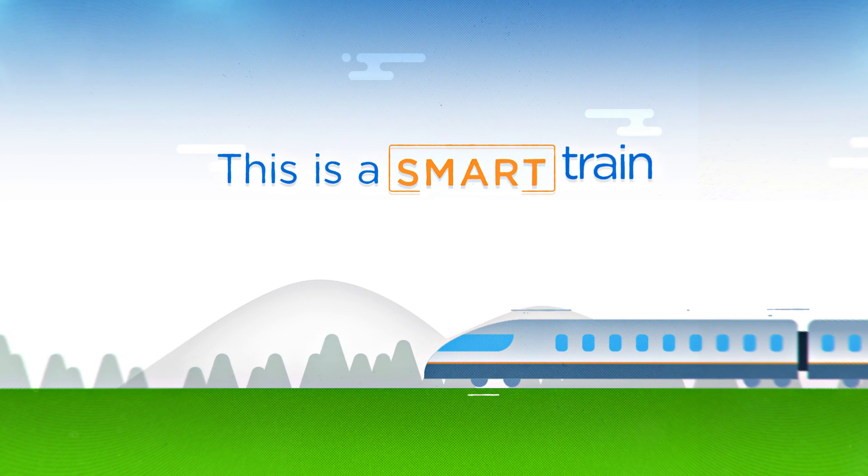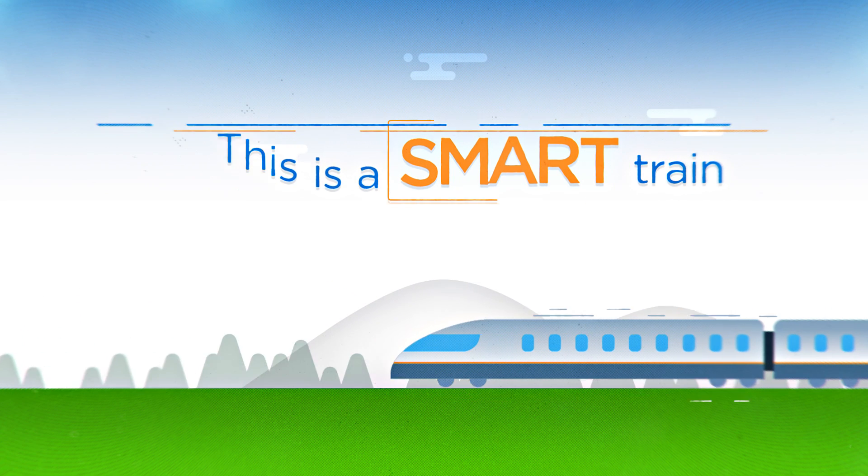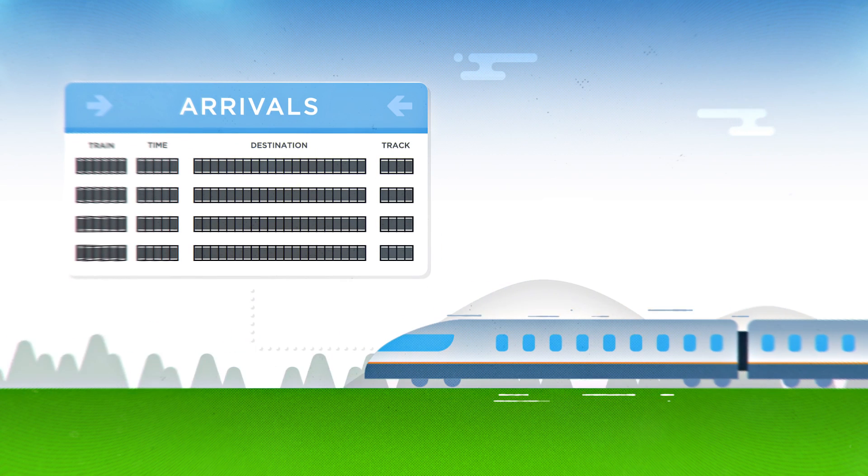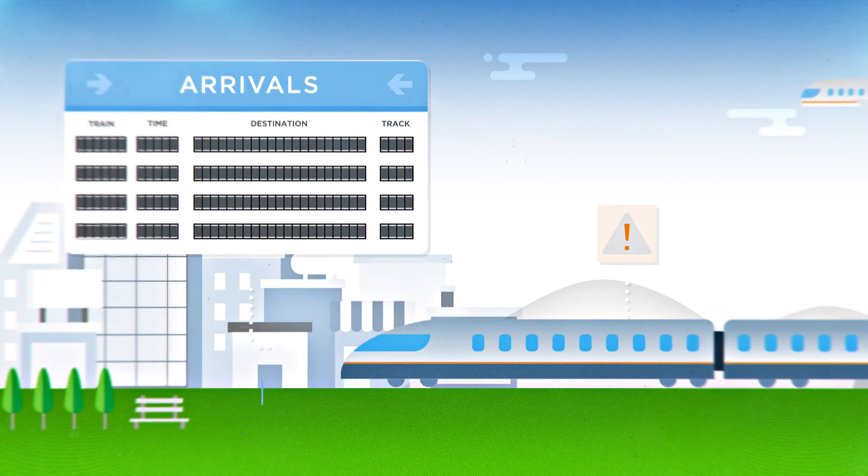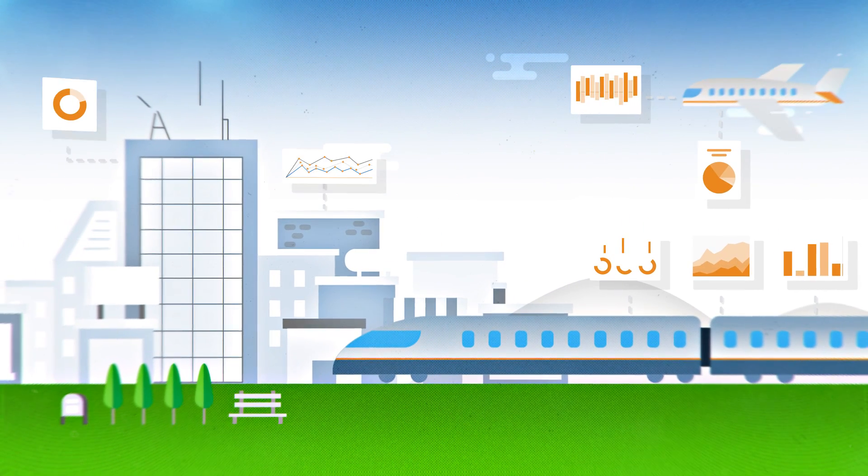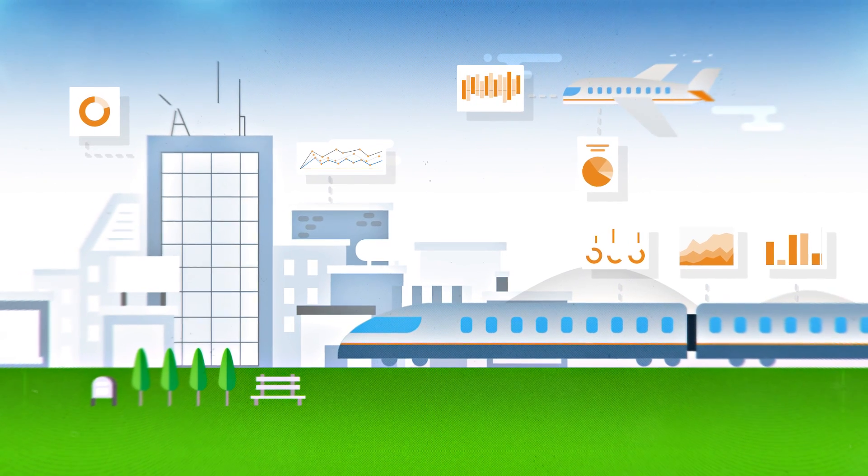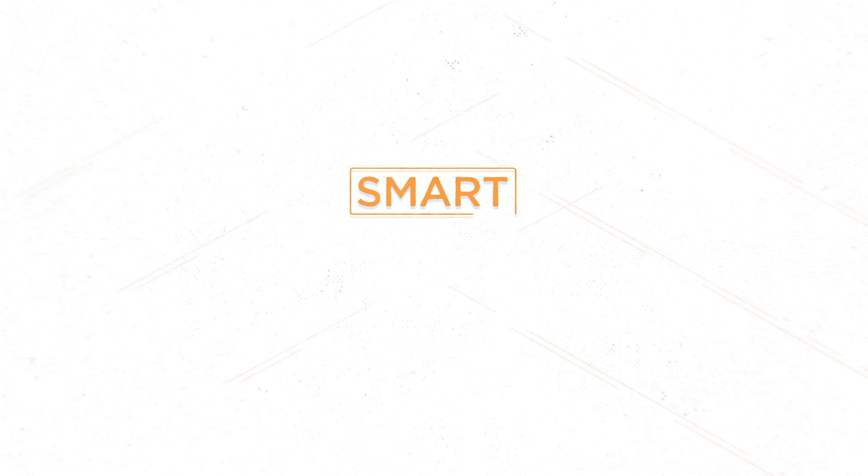This is a smart train. Why smart? Because it can guarantee arrival times. Because it can predict part failures. Because it can take market share away from an airline. That is what makes it smart.